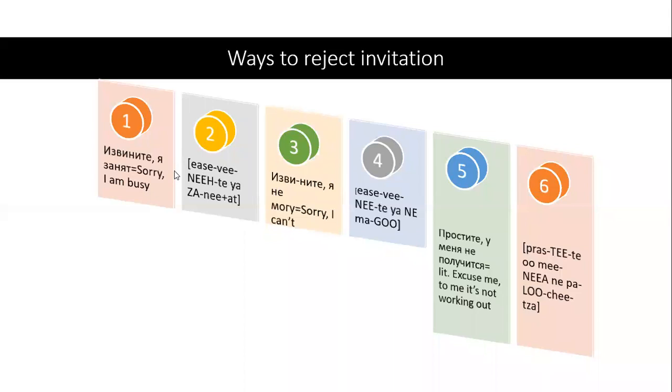Ways to reject an invitation could be извините, я занят, sorry I am busy. Or you could say извините, я не могу, sorry I can't. And finally, you can also say простите, у меня не получится. Literally means excuse me, to me it's not working out.